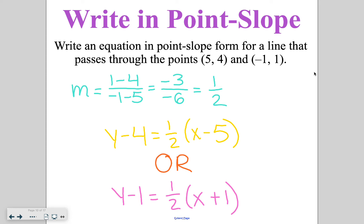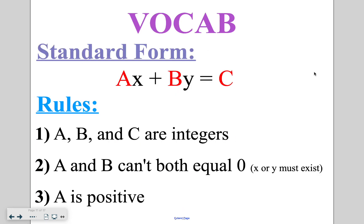That wraps up point slope form. The other form is standard form, written as ax plus by is equal to c — this is where x and y are on the same side of the equation. There are three rules for standard form: first, a, b, and c cannot be fractions — they must be integer values. Second, a and b can't both equal zero, meaning either x or y must exist in the equation. Third, the a value — whatever is in front of x — must be positive.